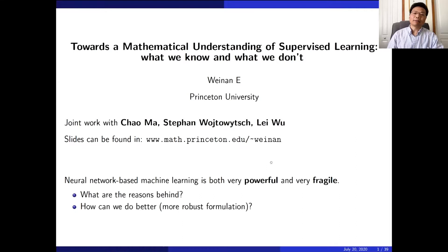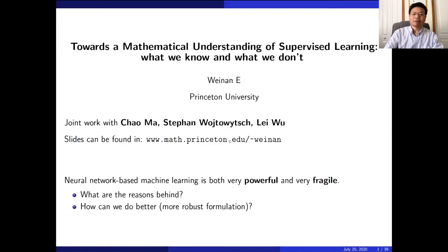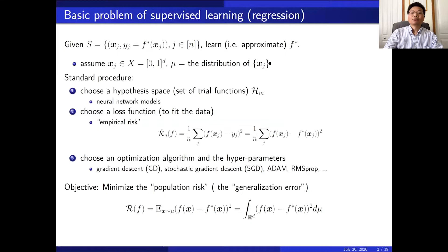I'm going to be talking about work from a lot of people, but the part I'm involved with is joint work with a group of distinguished young people: Chewu, Stefan Wojtowytsch, and others — they're all at Princeton right now, but Chewu is moving to Stanford very soon. You can find my slides on my webpage. We're focusing on the regression problem, where we are given finite-size training data for a target function F* and want to learn — namely approximate — F*.